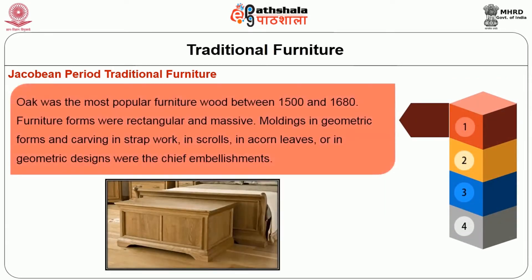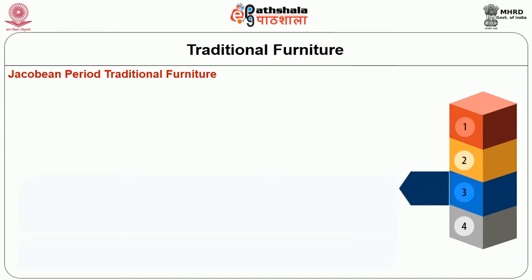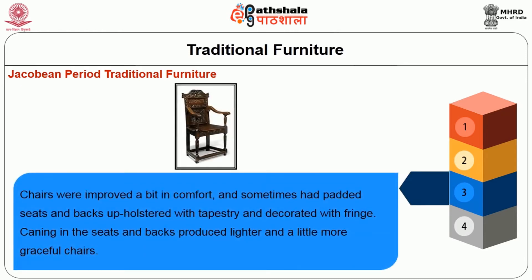Oak was the most popular furniture wood between 1500 to 1680. Furniture forms were rectangular and massive. Moldings in geometric forms and carving in strapwork, in scrolls, in acorn leaves, or in geometric designs were the chief embellishments. The bulbous or melon leg of the Elizabethan period continued for a while but later gave way to the more slender baluster, Flemish scroll, and spiral twist legs. The spiral turning was a Portuguese influence.